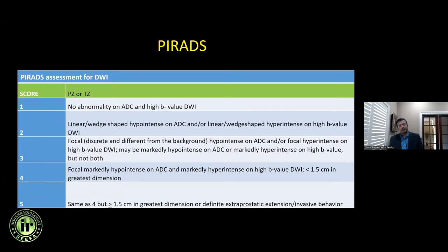For DWI sequences, signal abnormality is characterized in both PZ and TZ in a very similar way. To call a lesion PI-RADS 4 on DWI, it should have focal hypointensity on ADC and marked hyperintensity on high B-value. If you only see hypointensity on ADC but not hyperintensity on high B-value, or vice versa, those are classified as PI-RADS 3 on DWI. Linear or arc-shaped findings suggesting sequelae of prostatitis fall under PI-RADS 2, and no abnormality is PI-RADS 1.